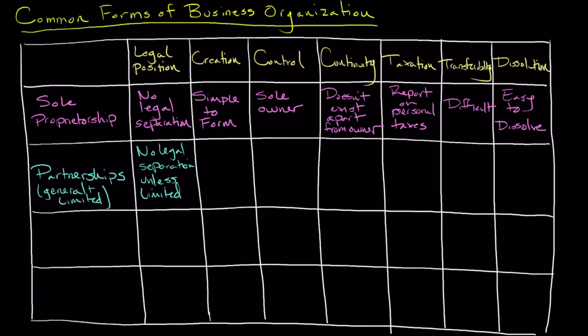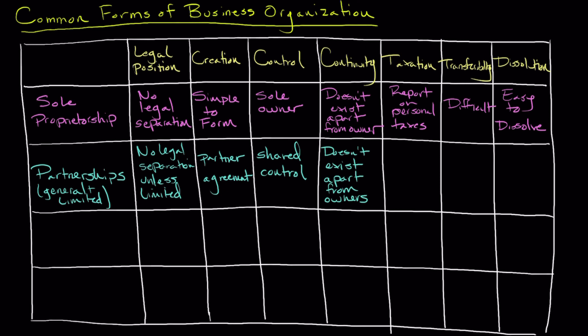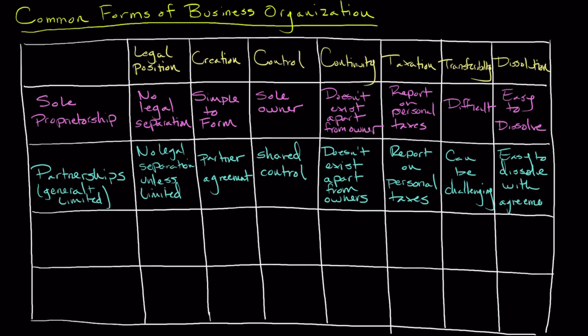Creating a partnership is typically straightforward — it usually involves a simple agreement between you and your partners. The partnership can last for as long as you and your partners agree, or until someone decides to leave. From a tax standpoint, it's handled similarly to a sole proprietorship, with each partner reporting their share of profits or losses on their own personal tax returns. Transferring ownership interest can be tricky unless it's all spelled out in your partnership agreement. Dissolving the partnership can happen when somebody leaves or when everyone agrees it's time to part ways.